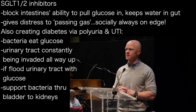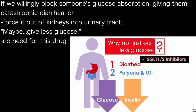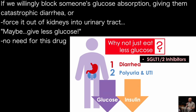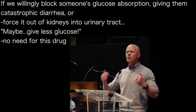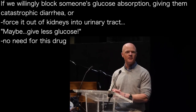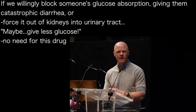But in this paradigm, if we are willing to block someone's glucose absorption and give them catastrophic diarrhea, socially speaking, or we are willing to block the kidneys' ability and push glucose out through the urinary tract — I submit that there's like a little shoulder angel whispering: maybe just give them less glucose. Maybe tell them to eat less glucose. If we're willing to block it from coming in or force it out, just put less in the system in the first place. And then you've undone the necessity or the benefit of this drug class.